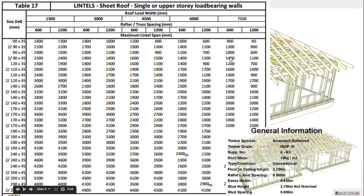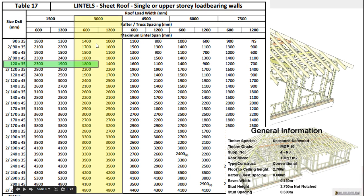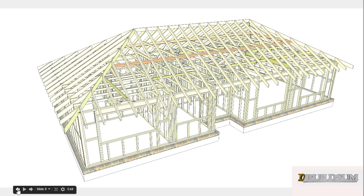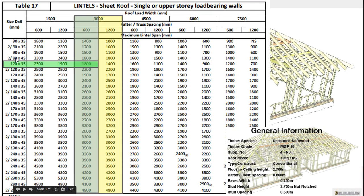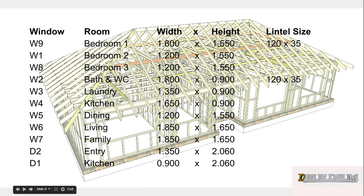We need to go back to our door and window schedule to find the maximum width — you'll remember this from the studs at the sides of openings. Our first one is 1800mm wide. Using the 3-metre roof load width column and 600 truss spacing, I could use 290×45s, but 1×120×35 is going to be far more efficient. So I'm going to use 1×120×35 for the lintel over that first window and anywhere else we have an 1800mm opening.